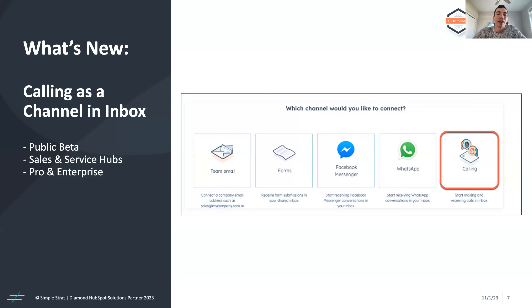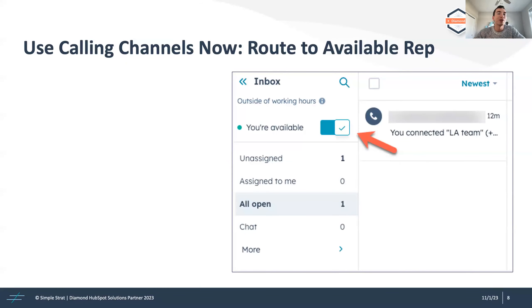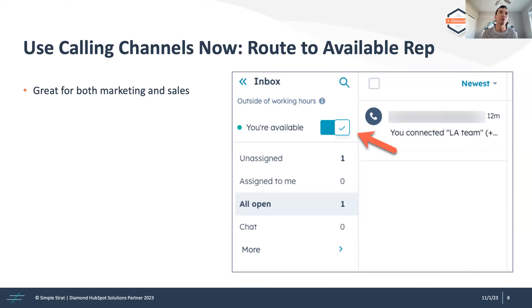The first update is Calling as a Channel in the Inbox, available in Sales and Service Hubs at the pro or enterprise level. It works with inbound calling — you need a HubSpot phone number set up for inbound calling. It allows you to have an inbound call ring up to 10 people on your team simultaneously. The people it's ringing do have to have paid seats — professional or enterprise seats in Sales or Service Hubs — to be selected to receive those inbound calls.